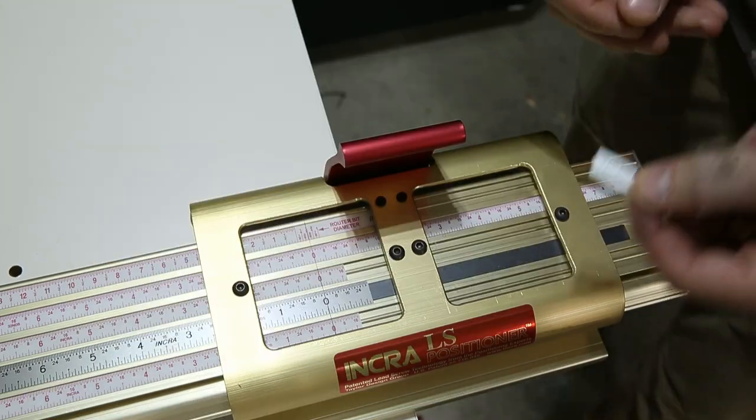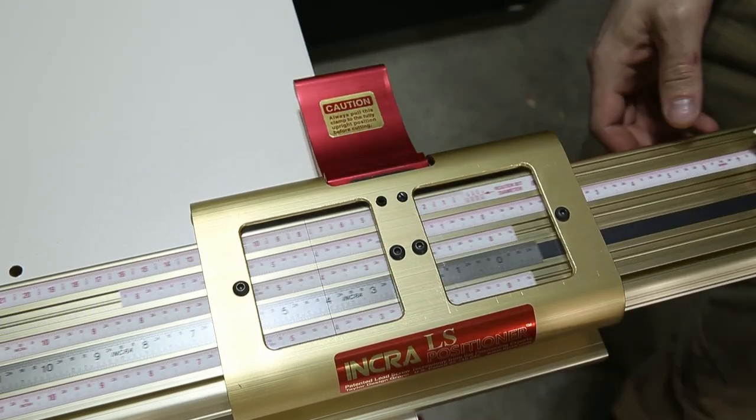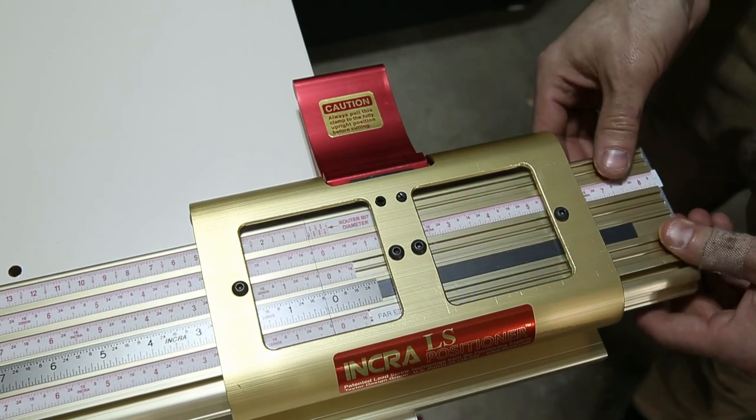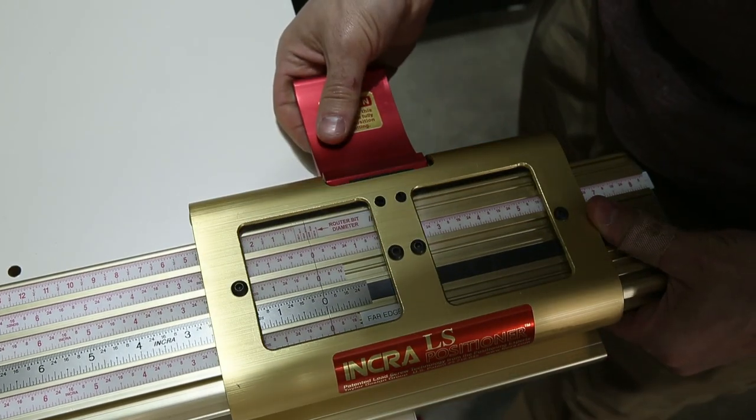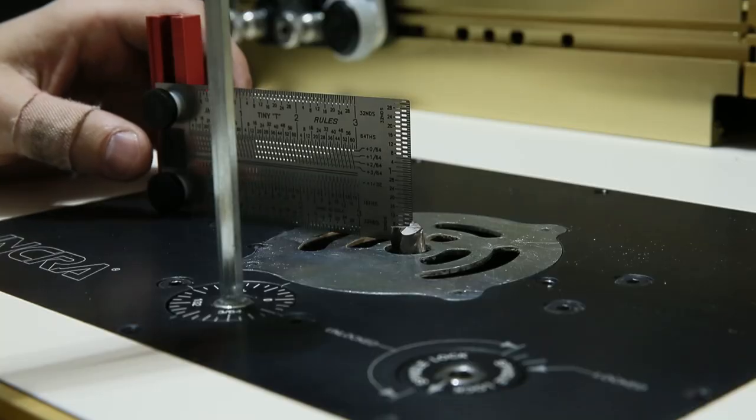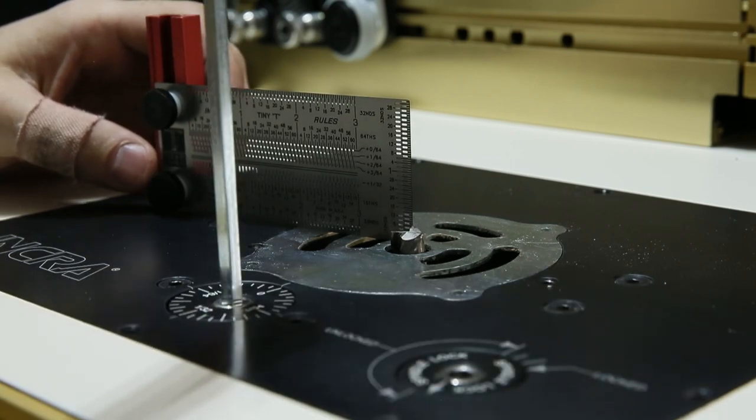I've actually never been able to do that on my job site table saw before. So I'll set up my router table now to create the rabbet or rebate for the actual glass. And I'll set the height here using a little edge ruler.